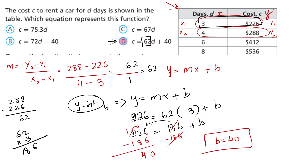Now write the final equation: y equals 62x plus 40. In the question, x is represented by d (days) and y is represented by c (cost). So the equation is written as c equals 62d plus 40.